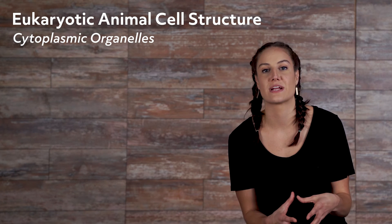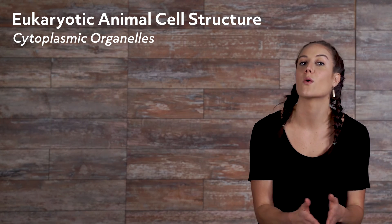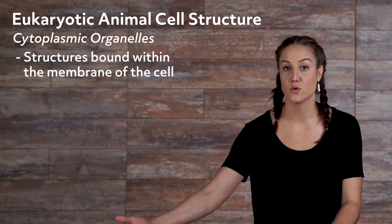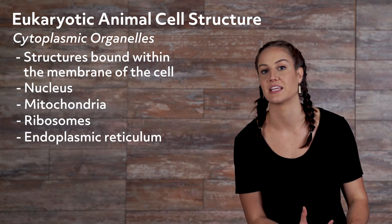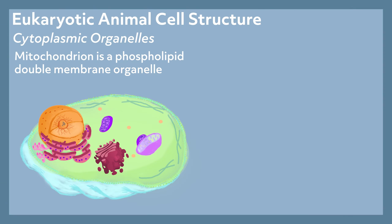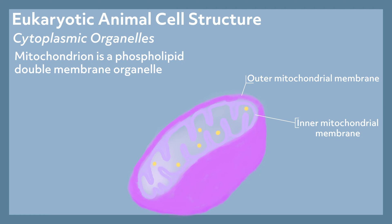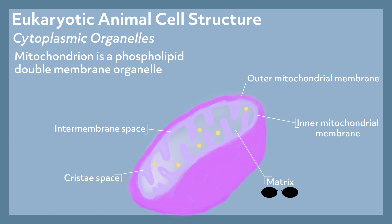Cytoplasmic organelles are often referred to as little organs, which is what organelle means. They are structures bound within the membrane of the cell. Cytoplasmic organelles include mitochondria, ribosomes, endoplasmic reticulum, Golgi apparatus, and lysosomes. A mitochondrion is a phospholipid double membrane organelle shaped sort of like a bean, with five major compartments: the outer mitochondrial membrane, the inner mitochondrial membrane, the intermembrane space between them, the cristae space created between the inner membrane foldings, and the matrix — the space inside the inner mitochondrial membrane. A mitochondrion also contains its own DNA, called mitochondrial DNA, found within the matrix.